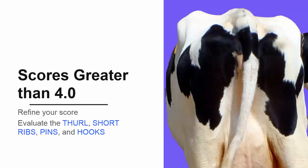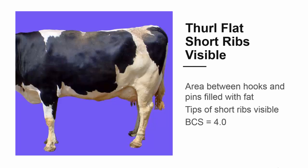When we left off, we had a cow with a score of over 4. Let's refine that by evaluating the thurl, short ribs, pins, and hooks. The score will increase as more of these parts are covered with fat. The area between the hooks and pins is the first of these landmarks to fill in with fat. So in all cows with a score over 4, the thurl area appears flat.